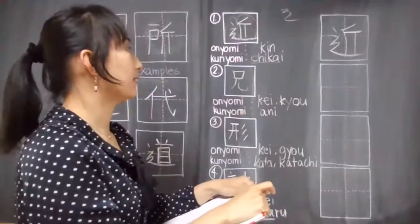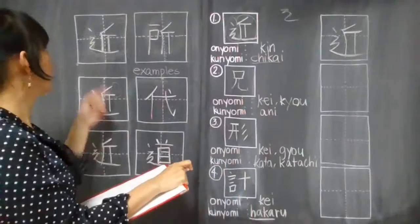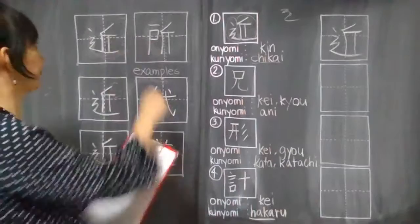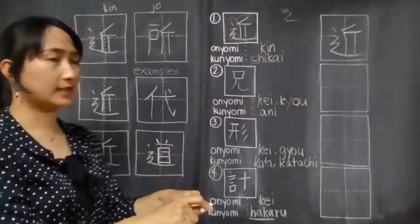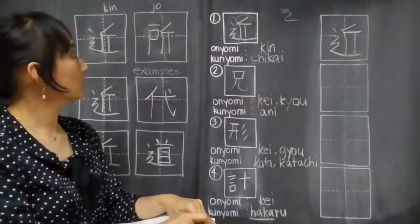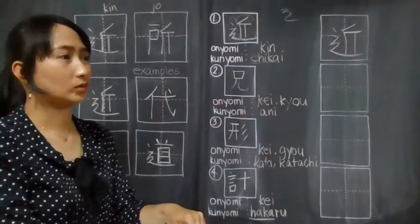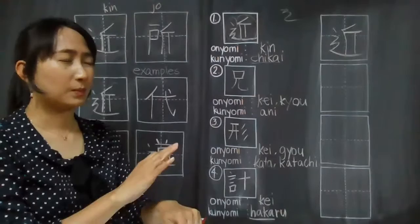Again guys, chikai means near. And the examples that I have for you, I already wrote over here. So this one is kinjo. Kinjo means neighborhood. Our neighborhood is kirei, clean, or chizuka, peaceful, calm, or quiet.